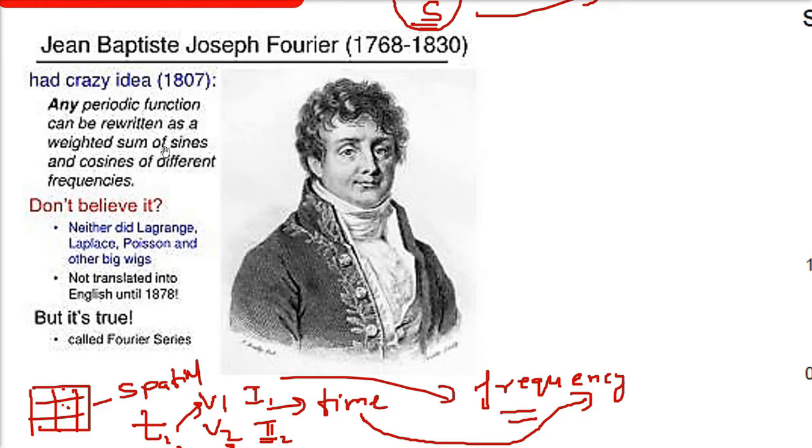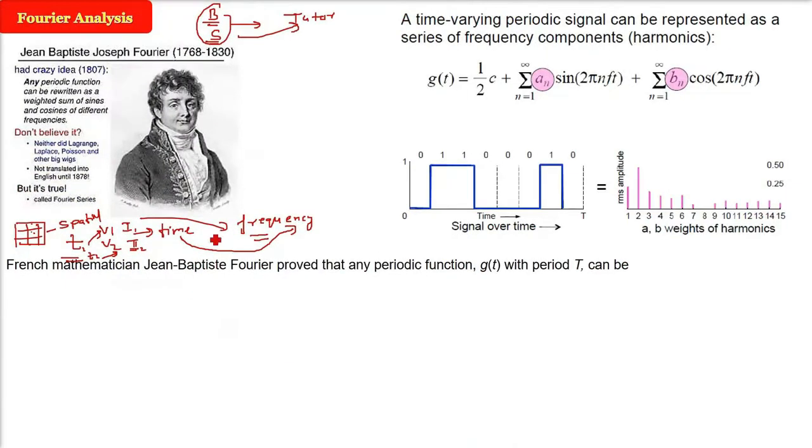Now most of the people didn't understand and those who understood, they didn't believe. The big names like Lagrange, Laplace, Poisson, all the big names, they didn't believe it. Not until 1878 when it was actually, his thought was actually translated and it came to be true. And that was called, now as the Fourier series is the basis of all the digital communication.